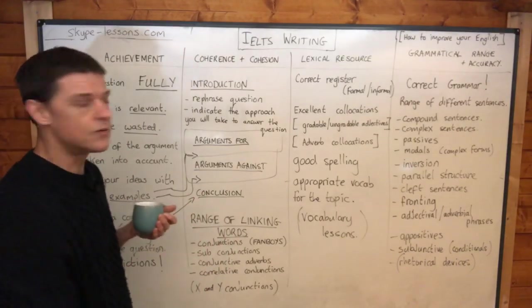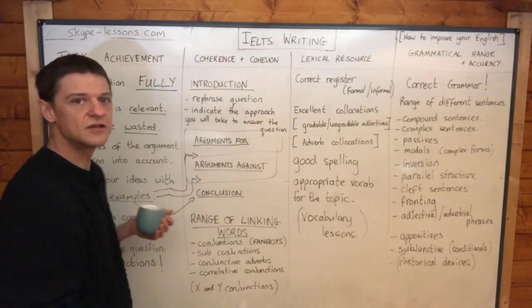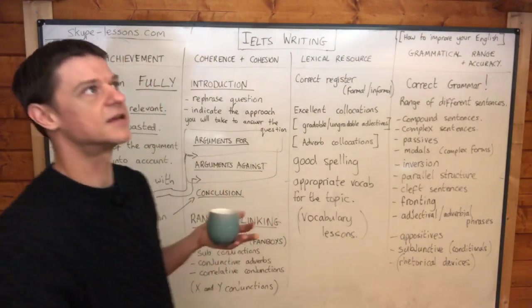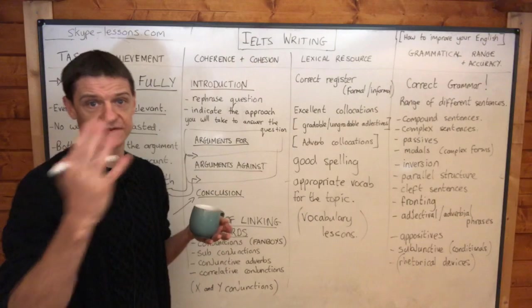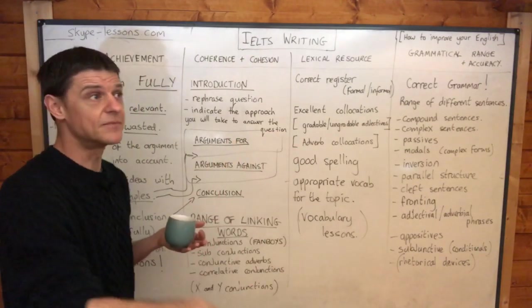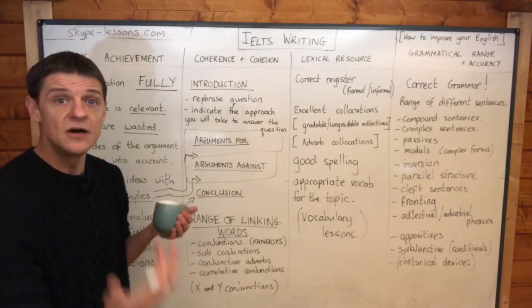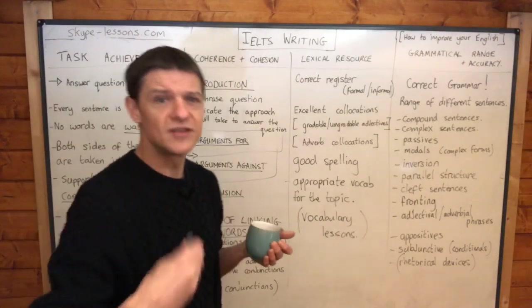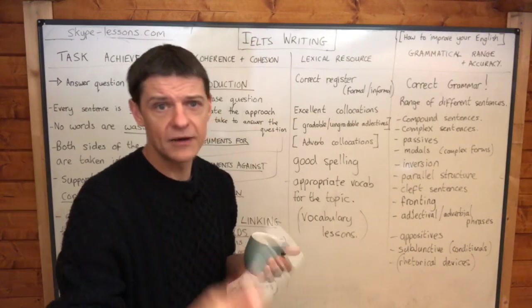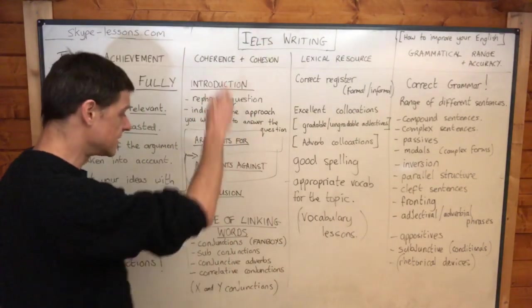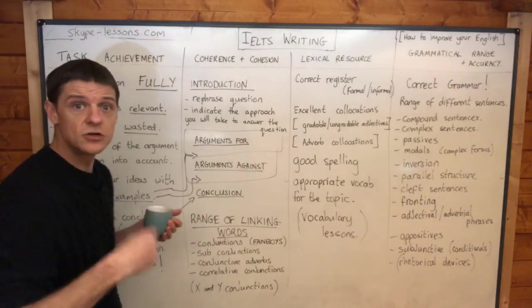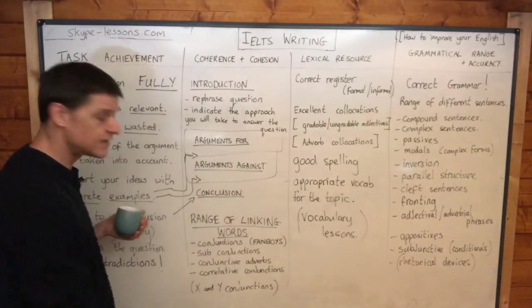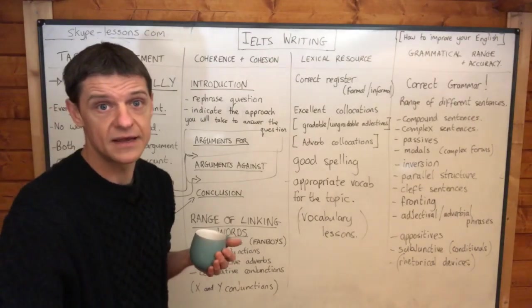A range of linking words is important for coherence and cohesion. Linking words are words like 'firstly,' 'secondly,' 'moreover,' 'besides,' 'in conclusion,' 'in summary,' 'on the one hand,' 'on the other hand.' All of those are really useful. If you're using the same linking words throughout the essay, that will immediately put your mark down. If you're using a range of linking words, that will raise your mark.